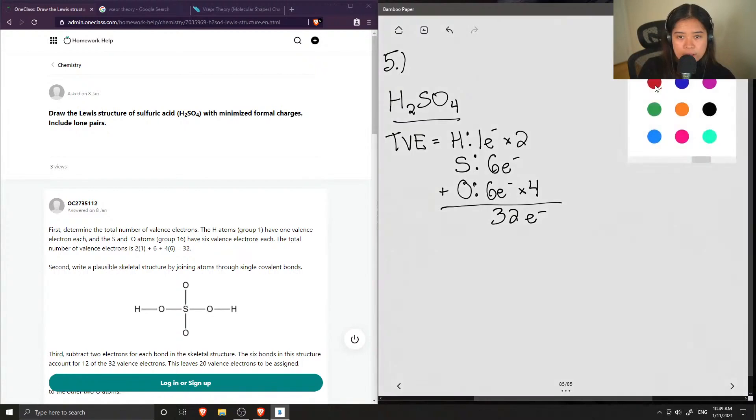Okay, so now let's draw our Lewis structure starting with the sulfur in the middle as our central atom. And now I'm just going to draw single bonds to all my oxygens. And I'm going to make two of my oxygens contain the hydrogen atoms. So now let's draw in all the lone pairs and see how many electrons I've drawn so far.